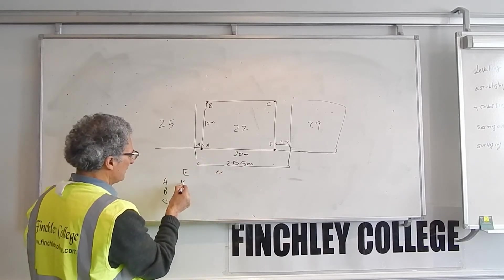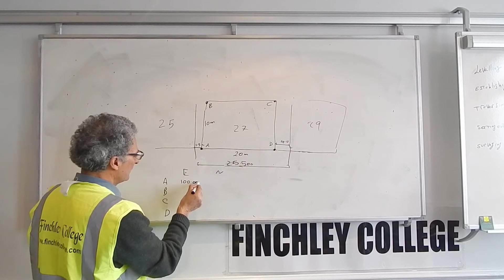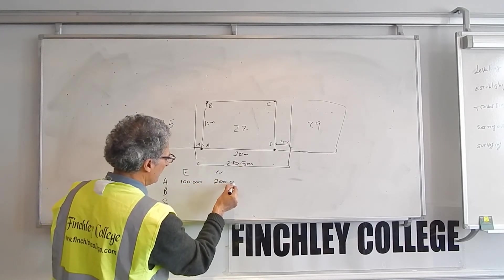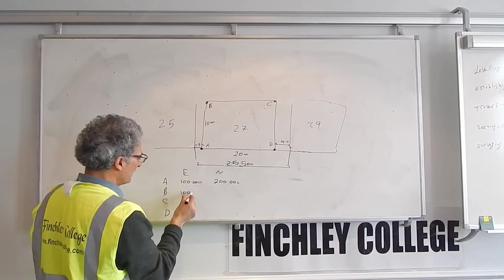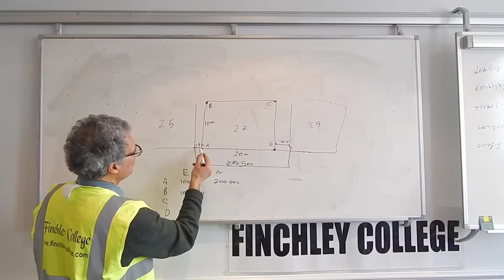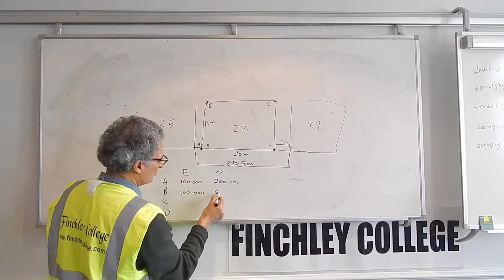A, I give it for example, easting 100 meters and northing of 200 meters. B will have the same easting, would be 100 meters, and the northing would be 200 plus 10, would be 210 meters.